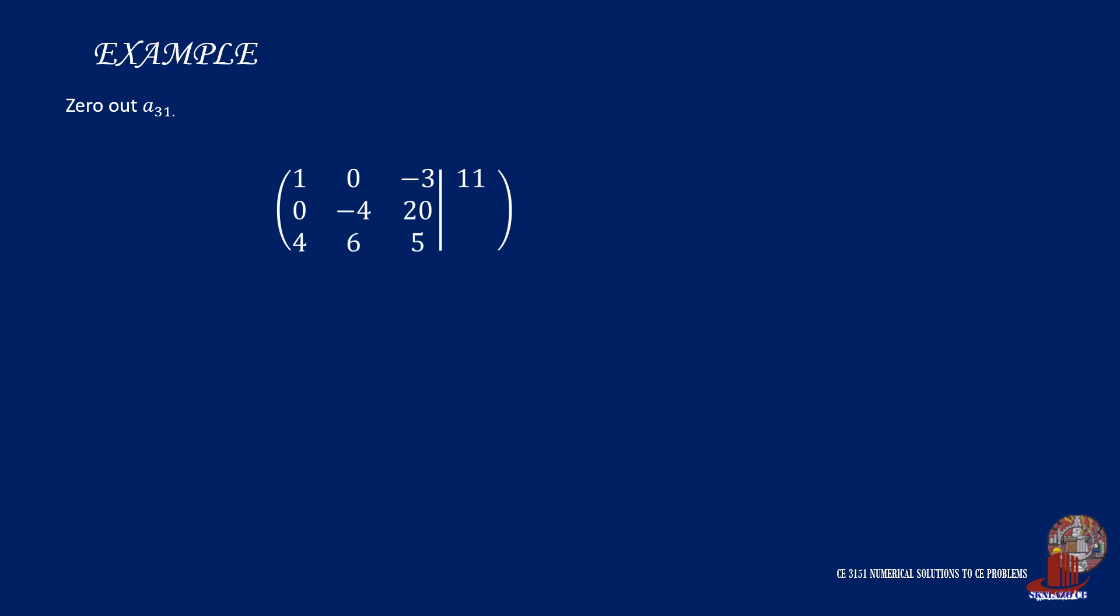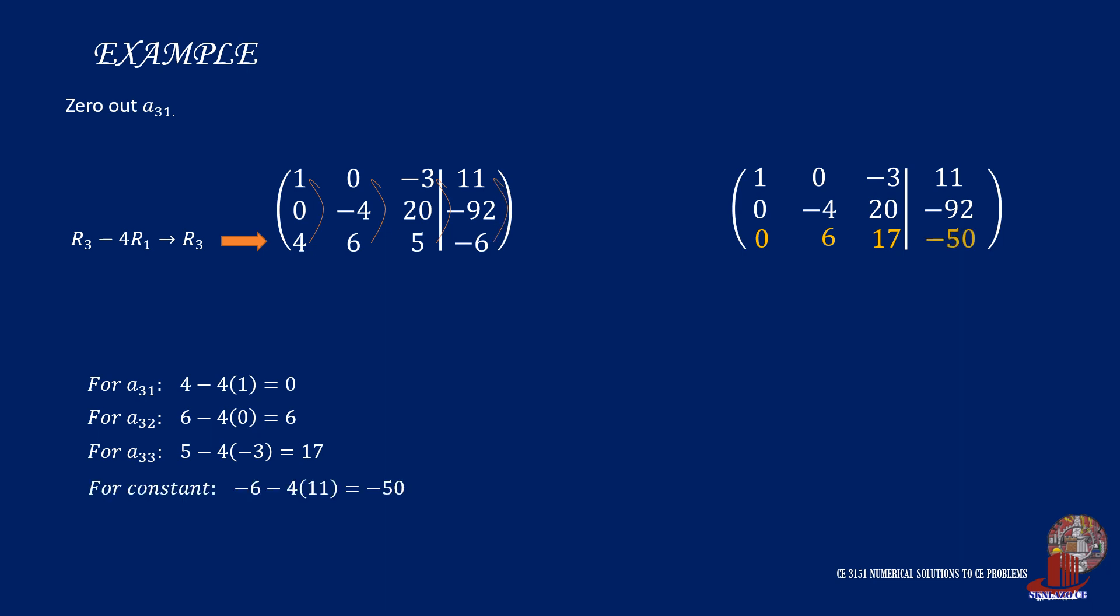Now we can also zero out the last element from the first column. And we can use the formula row 3 minus 4 times row 1 for the new row 3. Element 3,1 gets 4 minus 4 times 1 to have 0. Element 3,2 has 6 minus 4 times 0, giving 6. The next element, A3,3 has 5 minus 4 times negative 3, simplified as 17. And the constant is computed as negative 6 minus 4 times 11, showing negative 50.